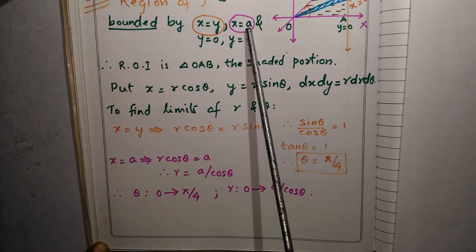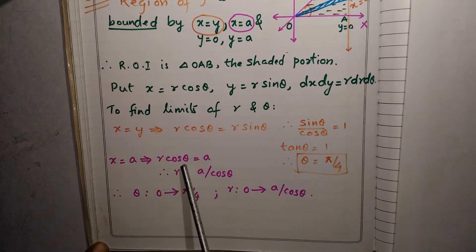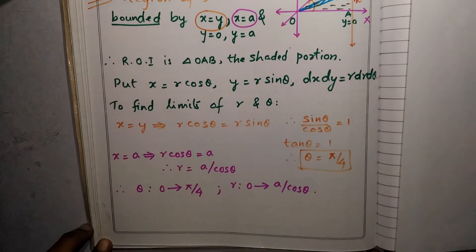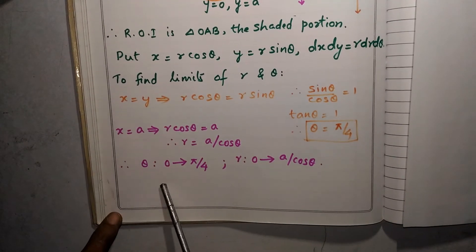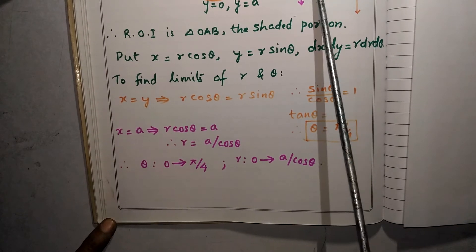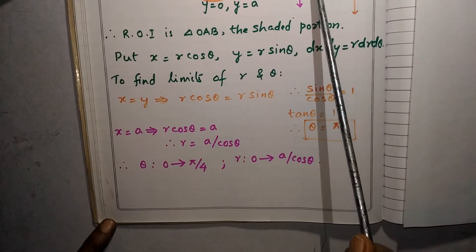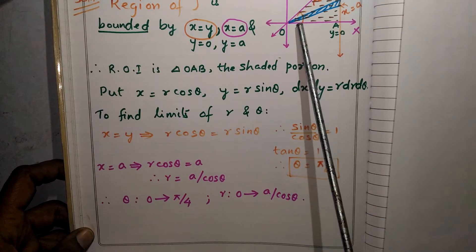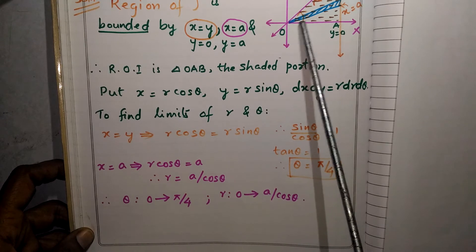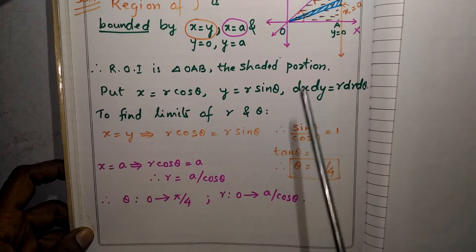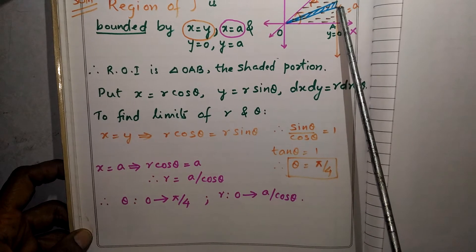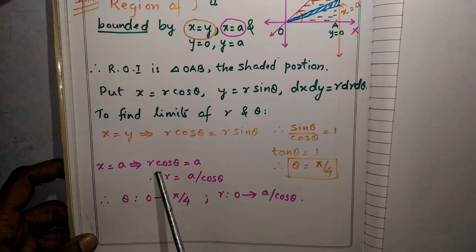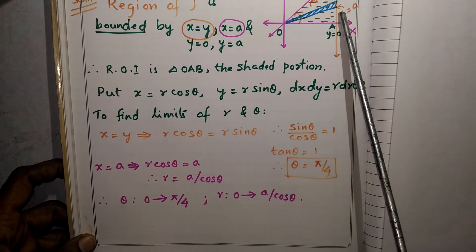When X equal to A, R cos theta equals A. Therefore, R equals A upon cos theta. So theta goes from 0 to pi by 4, and R goes from 0 to A upon cos theta, because substituting X equal to A gives R equal to A upon cos theta.